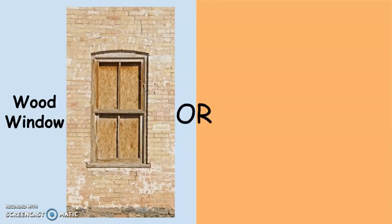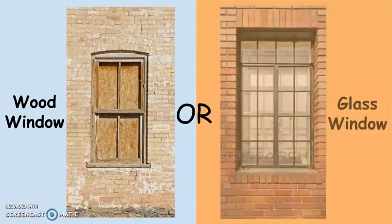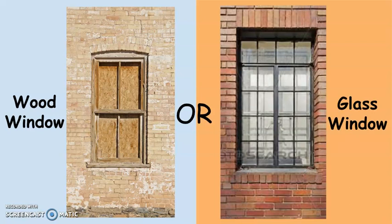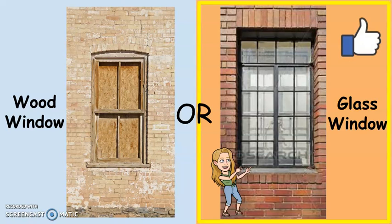Which is better, an opaque wood window or a transparent glass window? Point to the one that is better. Do you know? It's glass because glass is transparent. We can see through it.